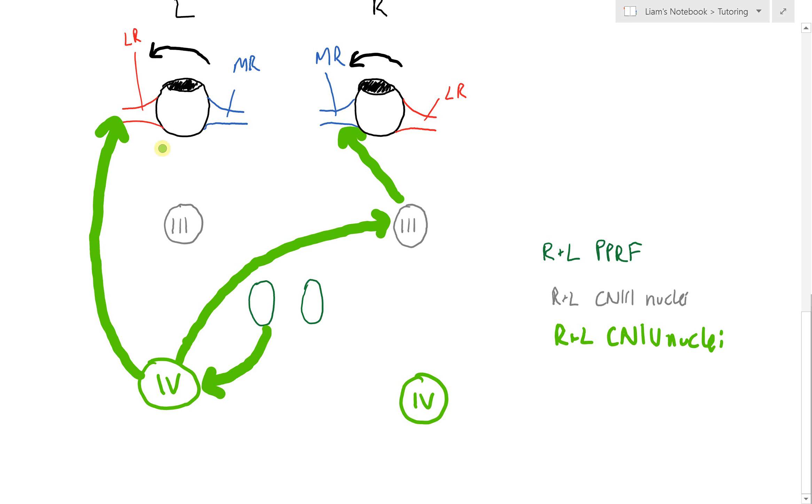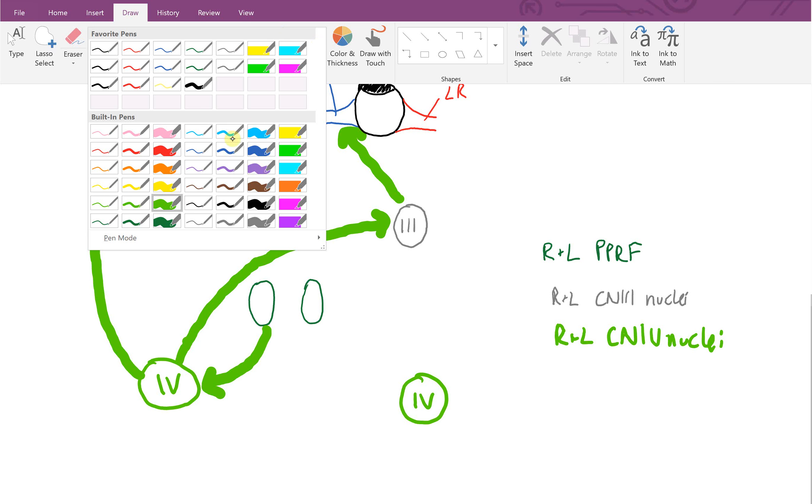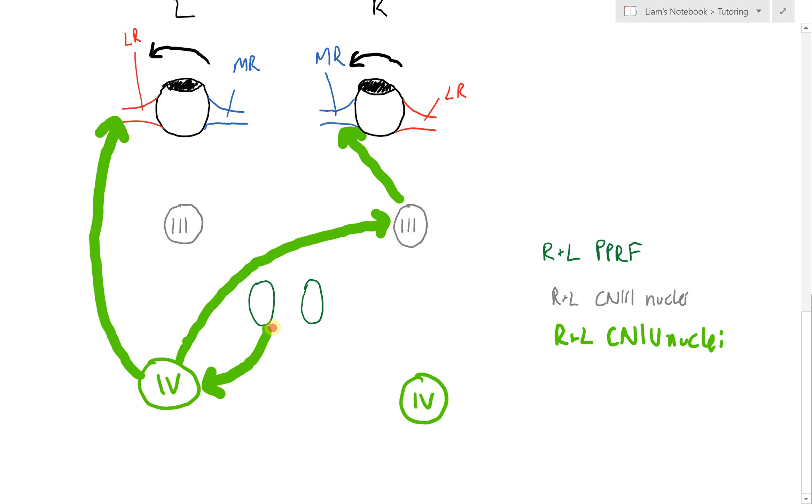However, we can't just activate muscles to turn. We also need to inhibit the opposing antagonistic muscles. So in red, this is an inhibitory burst neuron. Coming from the left PPRF, we get an inhibitory burst neuron innervating cranial nerve six nuclei (abducens), which has a direct effect inhibiting that lateral rectus muscle. In the same way, it's also going to inhibit our left cranial nerve three nuclei, which inhibits our left medial rectus.